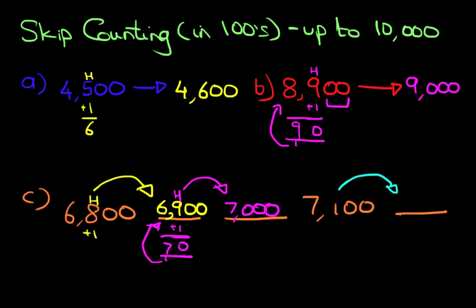And the very last one, find the hundreds. It's a 1, add 1, becomes 2. 7,200. So, the sequence of numbers is 6,800, 6,900, 7,000, 7,100, 7,200. It can't get any simpler than that.